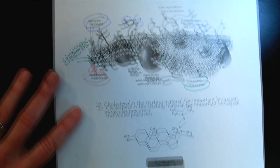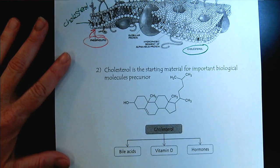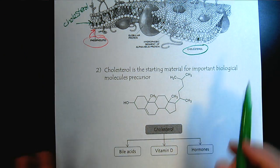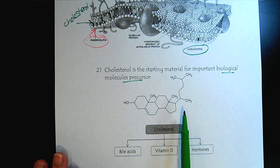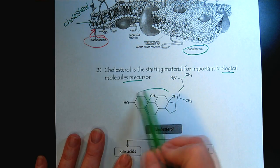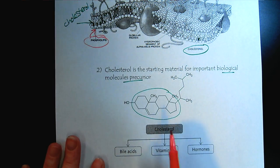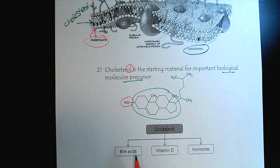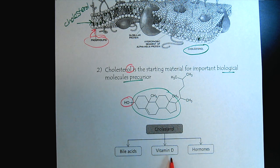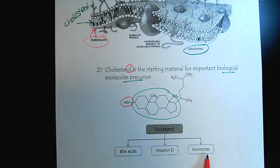Now we'll go on to cholesterol's other role in the body: it's a very important biological precursor to a ton of important compounds. Here's our buddy cholesterol — we recognize the steroid ring, and we know it's called cholesterol because of that alcohol functional group. Bile acids are made from cholesterol. Vitamin D, important for strong teeth and bones — without enough of it we get rickets. And then, of course, the hormones, which are for the most part steroid-based.